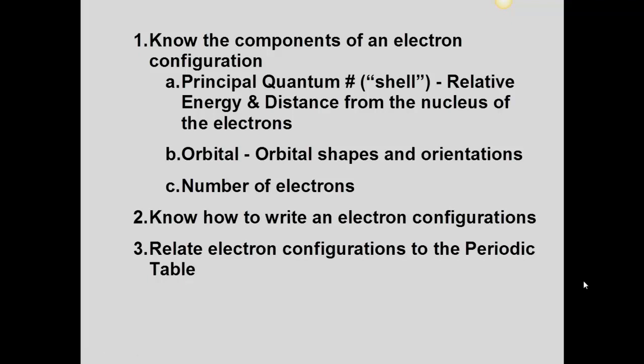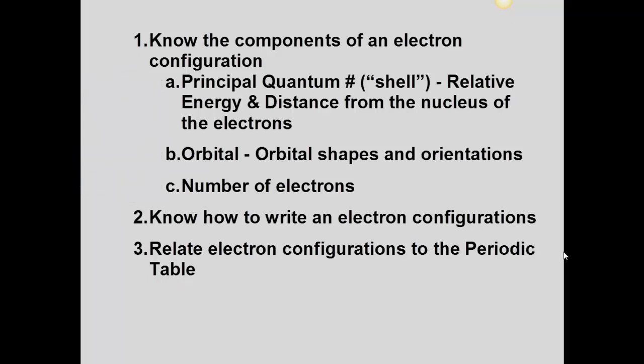In this video I'll show you how to write electron configurations using the periodic table. First we're going to learn some of the basics of an electron configuration. I think there are three main components to an electron configuration: the principal quantum number, sometimes called the shell, the orbital types, and the number of electrons. I'll give you an example of an electron configuration, and then we'll relate that to the periodic table.